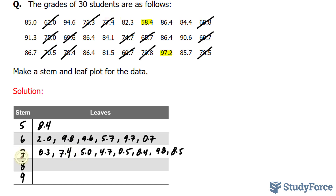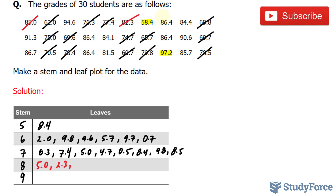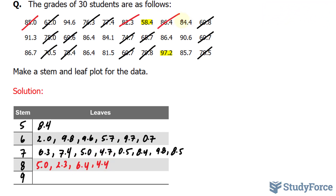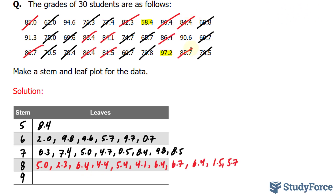Once you're finished with the 70s, we'll move on to the 80s. I have a number right here, 85. Then 82.3. Then 6.4, which represents this number, and 4.4. If you do it correctly, you should end up with this.